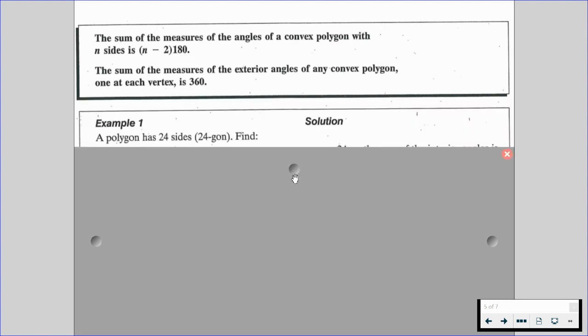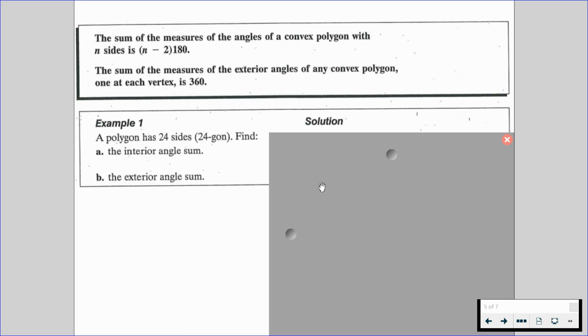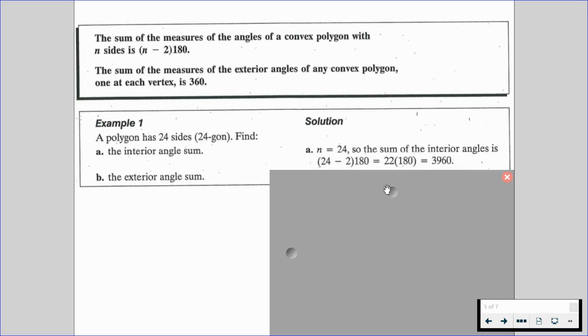So if we go through an example together, a polygon has 24 sides, we're going to call it a 24-gon. We want to find the interior angle sum and the exterior angle sum. So to find the interior, we know that n is 24. So the sum of the interior angles will be n minus two, or in this case, 24 minus 2, multiplied by 180. So we do 22 times 180 gives us 3,960.